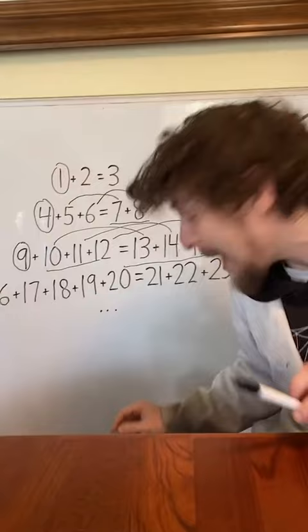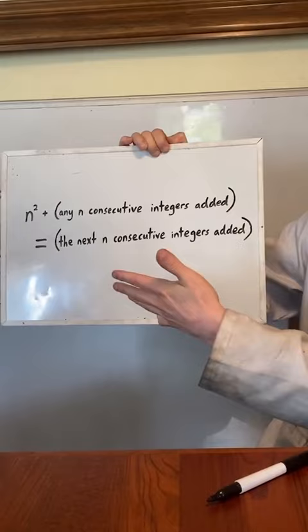And this pattern continues and relates to an even deeper pattern, that if we add any n consecutive integers and compare it to the next n consecutive integers added, the difference will be n squared.